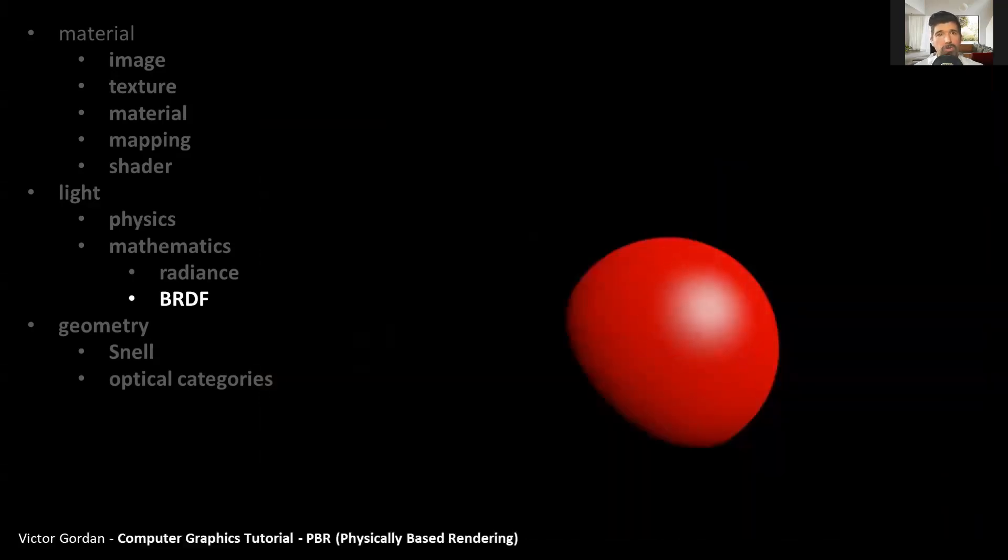Going back to isotropic reflections, there is something important to take into consideration, which is the specular highlight intensity. For example, in earlier models, the specular highlight keeps the same intensity as it covers more area. However, a more realistic behavior is for the specular highlight to decrease its intensity as it covers a larger area.